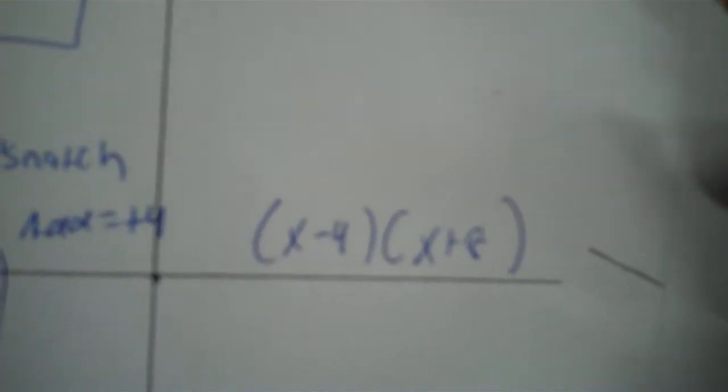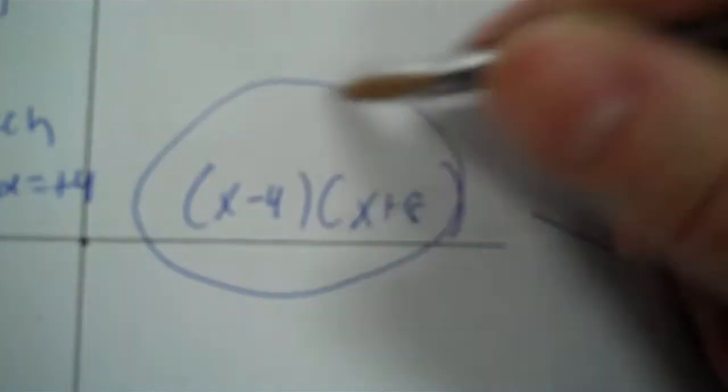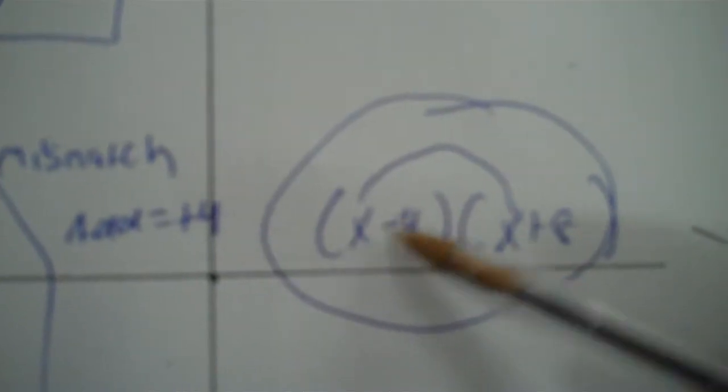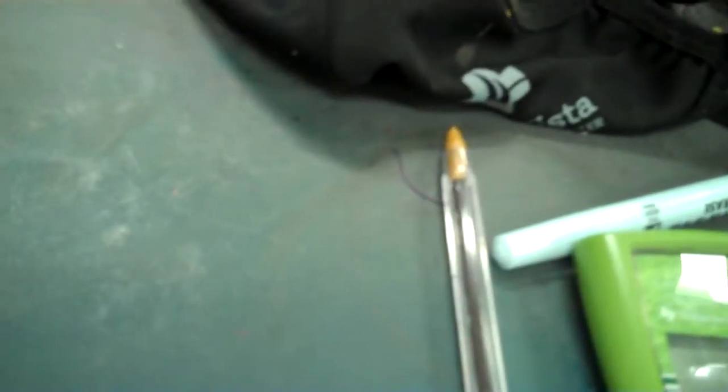You can always check: x times x should equal the A, which is x squared — it does, with the 1 applied in front. And negative 4 times positive 8 should equal negative 32 — and it is.